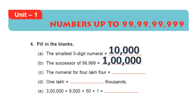The numeral for 4 lakh 4: first you write 4 because they said it is 4 lakh. Then, they didn't mention any thousands, hundreds, or tens place. So you put zeros in those places, and for ones they said it is 4. So we write 4 lakh 4 like this: 4,00,004.